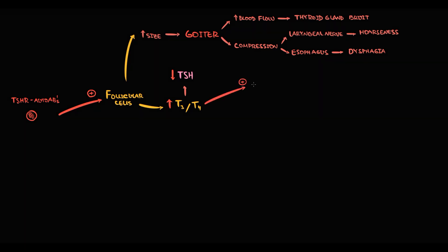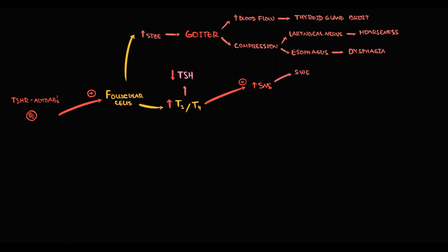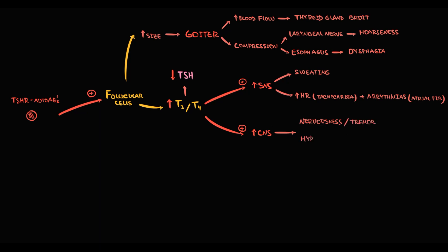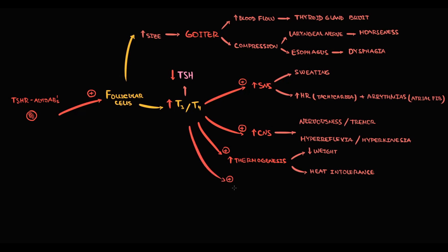Massive amounts of thyroid hormones cause potent stimulation of the sympathetic nervous system, leading to sweating, increased heart rate, and arrhythmias — especially atrial fibrillation. Overstimulation of the central nervous system can manifest as nervousness, tremor, hyperreflexia, and hyperkinesia. Thyroid hormones also stimulate thermogenesis, causing weight loss and heat intolerance. Additionally, thyroid hormones increase gut motility, and overstimulation causes diarrhea.